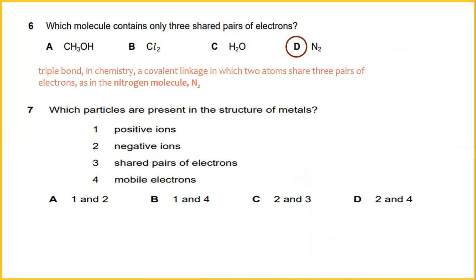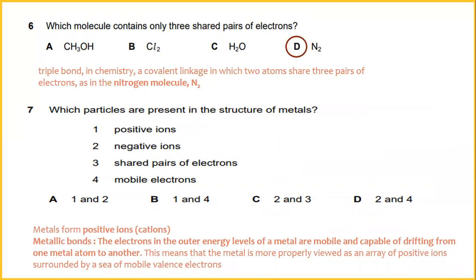Which particles are present in the structure of metals? It should be positive ion and mobile electron. Metals form positive ions. Metallic bonds: the electrons in the outer energy level of metals are mobile and capable of drifting from one metal's atoms to another. This means that the metal is more properly viewed as an array of positive ions surrounded by a sea of mobile valence electrons. The answer would be one and four.